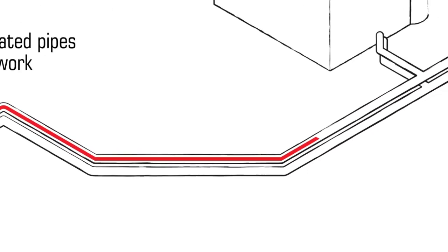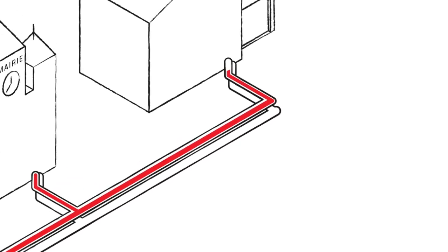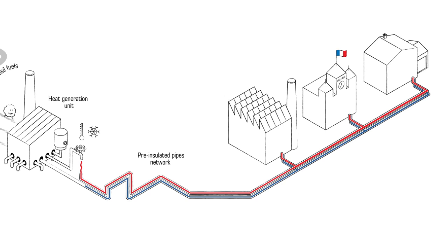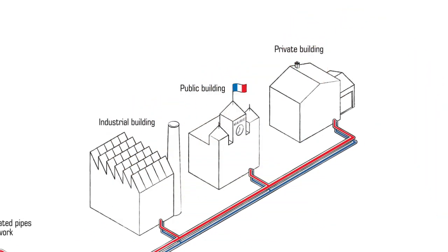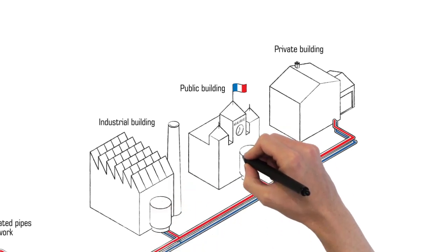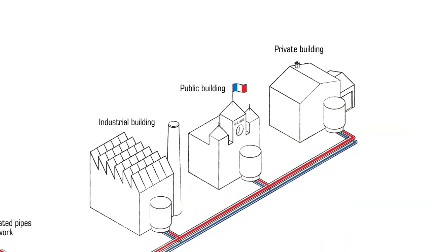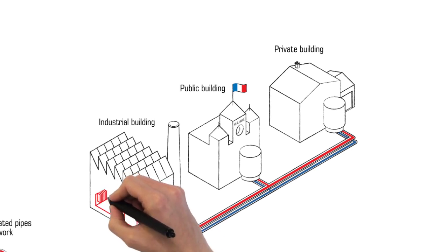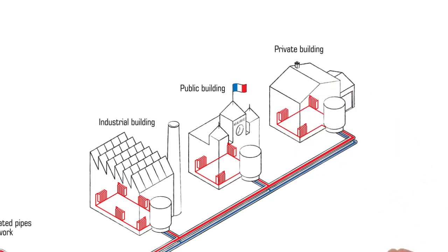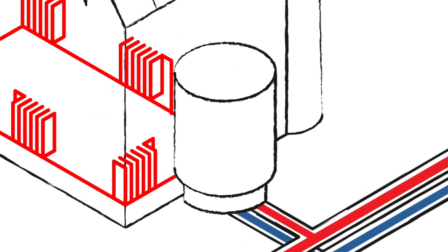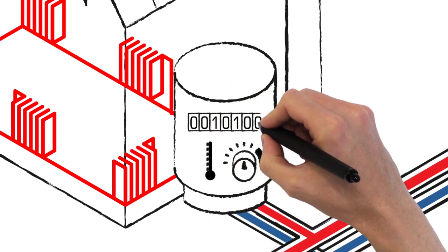This water is then channeled by the network of pre-insulated pipes to the various places of consumption, which are industrial, public or private buildings. Within every building, substations are equipped with an exchanger. They help transfer heat from this network of pre-insulated pipes to the internal network of the buildings. The exchanger also gives the possibility to adjust the flow and the temperature to users' needs and to account for their heat consumption.